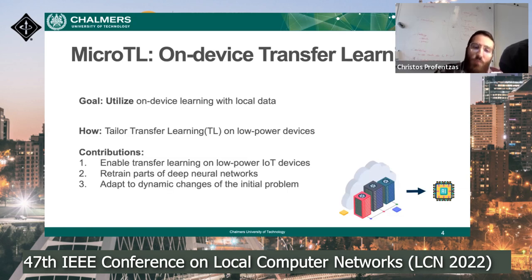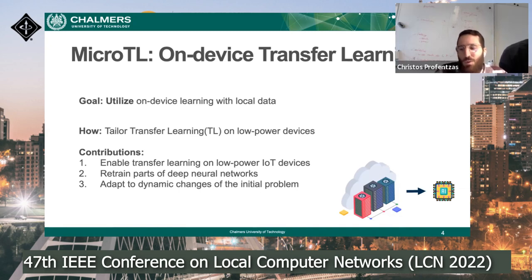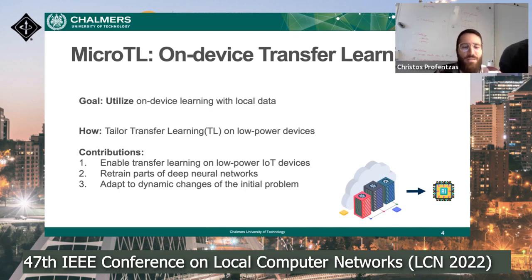With that, we propose MicroTL: on-device transfer learning. The goal is to have on-device learning with local data by tailoring transfer learning for these devices. This is not full-fledged learning — we retrain parts of the network. Our contribution is that we enable transfer learning and show it is feasible to take parts of deployed networks and retrain them on really low-power devices. The main benefit is that you can dynamically adapt to changes in your initial problem, since when you deploy a deep neural network on an IoT device, you typically never change it.